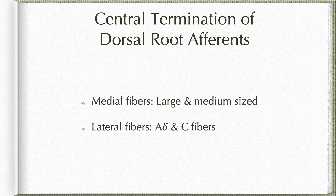The dorsal root afferents when they reach the spinal cord segregate into two streams based upon the size of the fibers they carry. The medial stream is made up of large and medium sized fibers; the largest reach the dorsal column whereas others synapse in laminae 2, 3 and 4. The lateral fibers are made up of A-delta and C fibers. They either ascend or descend in the dorsolateral tract of Lissauer for a few segments before synapsing with neurons in lamina marginalis (lamina 1) or in the substantia gelatinosa (lamina 2).